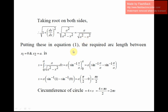Putting this into equation 1, the required arc length in the first quadrant has limits x₁ = 0 to x₂ = a. So s = integral from 0 to a of a/√(a² − x²) dx. Here a is a constant. The integration of 1/√(a² − x²) is sin⁻¹(x/a), evaluated from 0 to a. This gives sin⁻¹(1) − sin⁻¹(0) = π/2 − 0. So the value for this limit is πa/2.